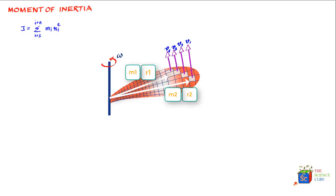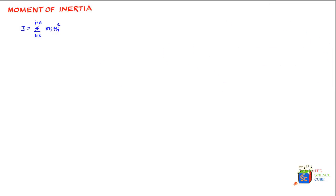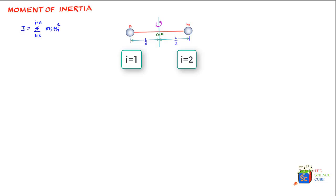In the last lesson we learned that the moment of inertia of a system of masses rotating about an axis can be given by the formula I = Σ mᵢrᵢ², where mᵢ is the ith mass at a distance rᵢ from the axis of rotation. To simplify, consider a system of masses where you have two masses, so i changes from one to two.